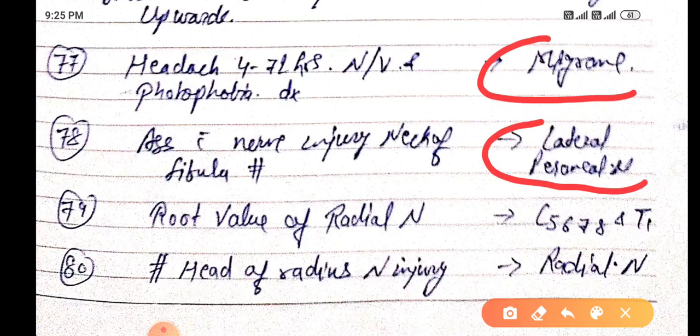Root value of radial nerve, that is C5, C6, C7, C8, and thoracic one. Fracture head of radius, nerve injury is radial nerve injury.